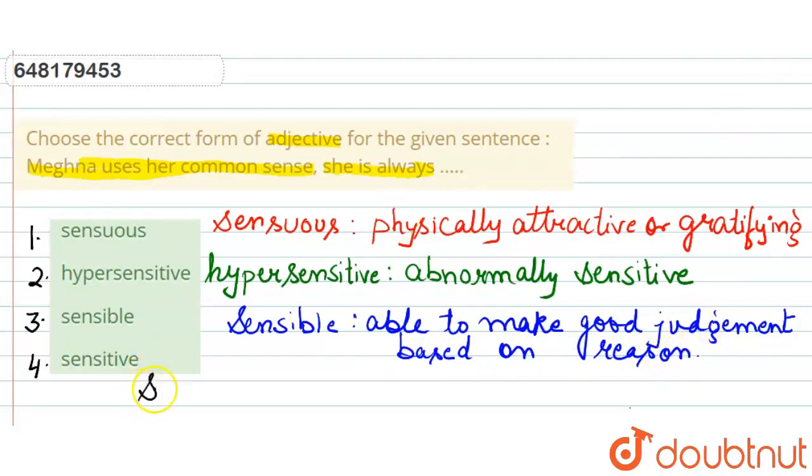And the last option that we have is sensitive. Sensitive ka kya matlab hota hai? Jho kya hai? Responsive hai. Responsive to slight changes. Ki tote moote, har tarha ke changes se, hulkese change se bhi koi response kar raha hai. Uspa bhi koi response de raha hai. That person is sensitive.